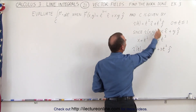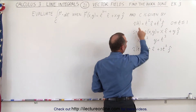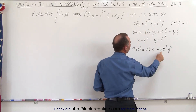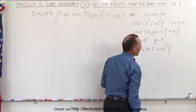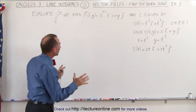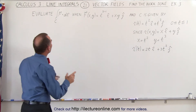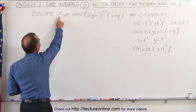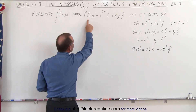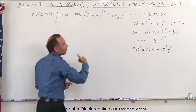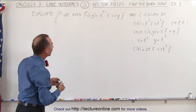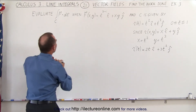If we take the derivative of the position vector in terms of t, that gives us 2t in the i direction plus 3t squared in the j direction. Before we can put together the integral, we must also write the vector field F in terms of t instead of x and y, so we'll have to make that replacement as well.